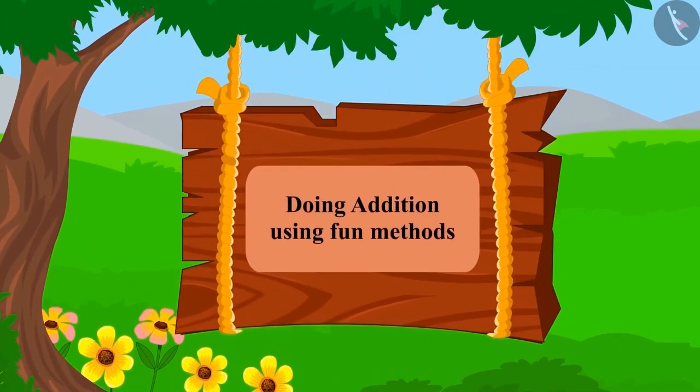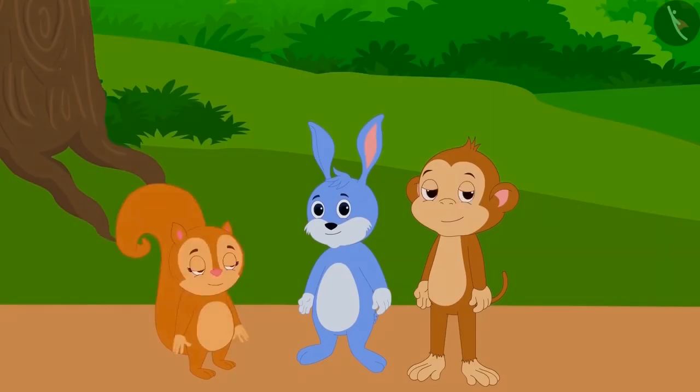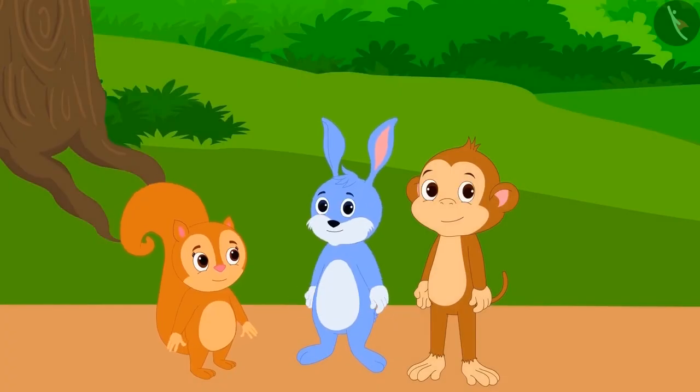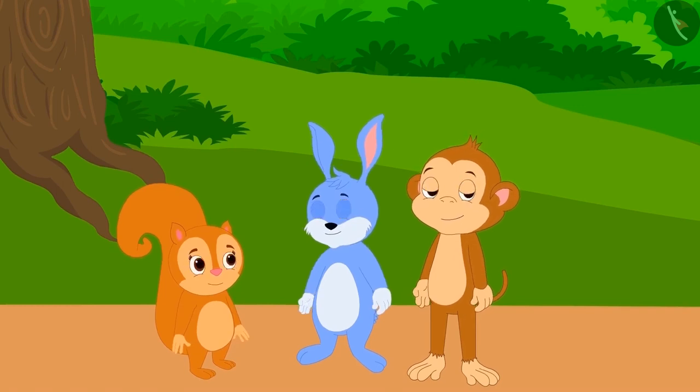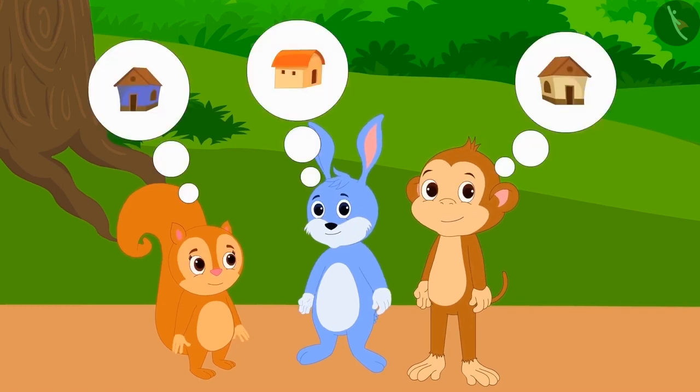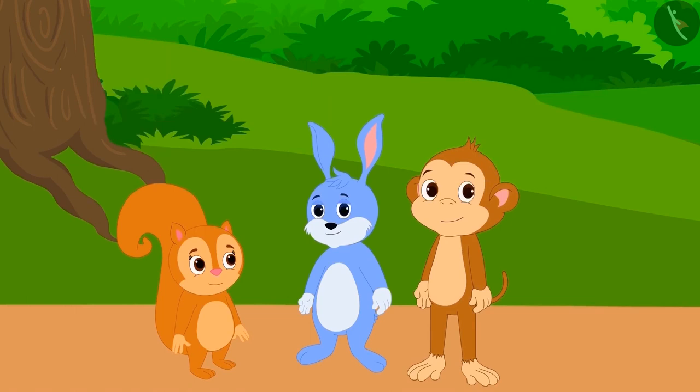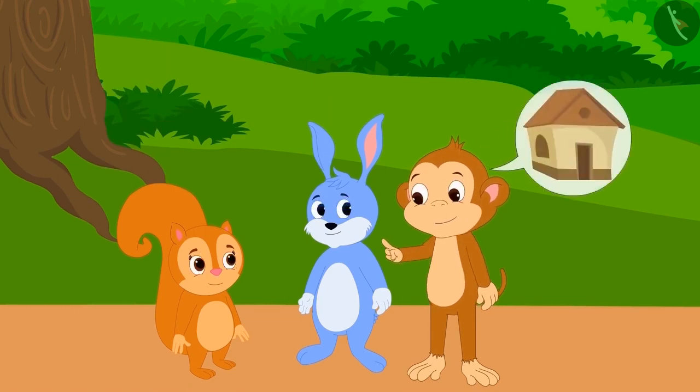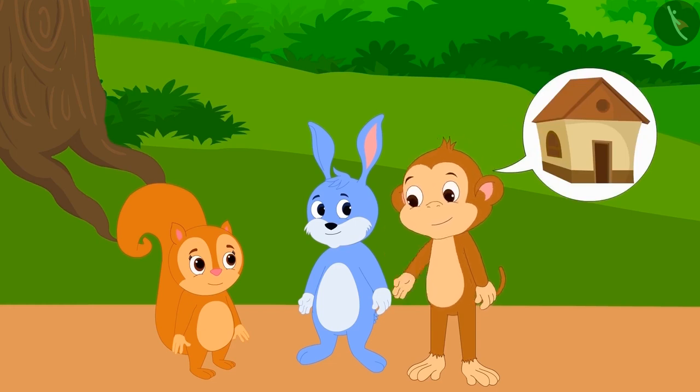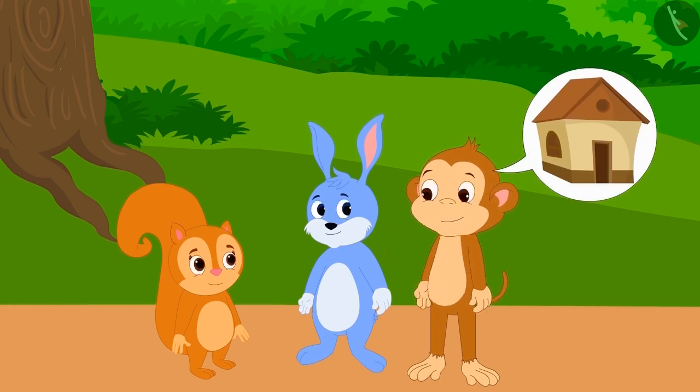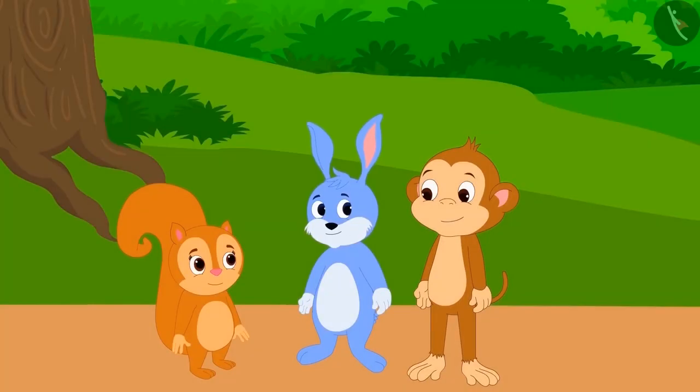Children, today we will learn to write any number in different ways using addition. Chanda the squirrel, Bunny the rabbit, and Babban the monkey decided to build a house in the forest. Babban told Chanda and Bunny that they should build a house together so that their house is the strongest, but Chanda and Bunny refused and said that they will build their own separate houses.